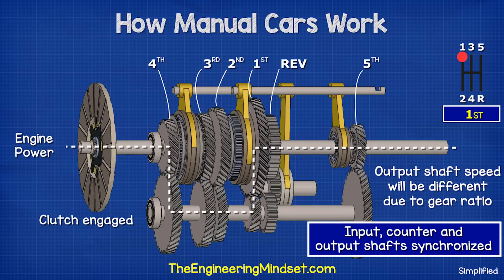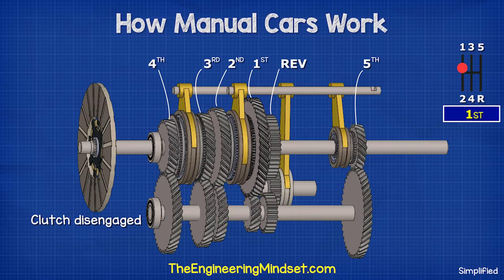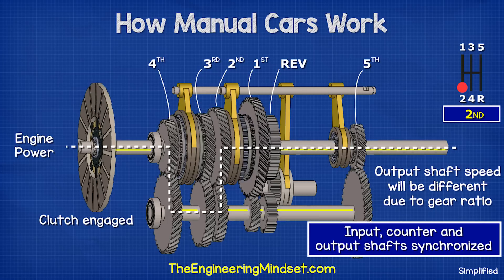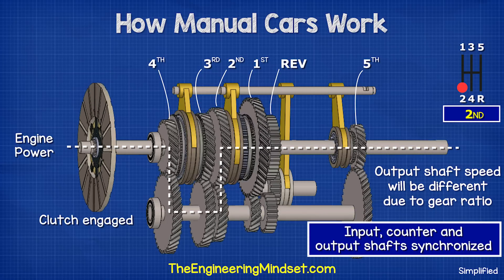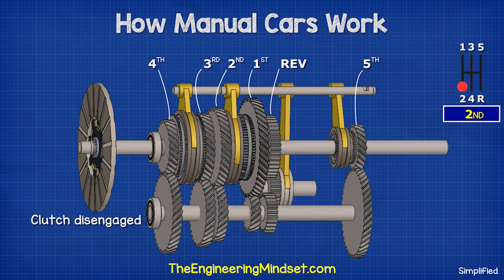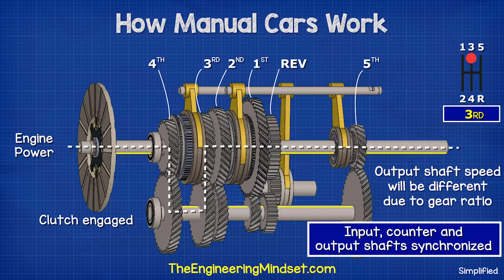For second gear, we disengage the clutch and use the gear shifter to disengage the first gear sleeve. Then we move the shifter into second gear, which pushes the sleeve and blocker ring. This synchronizes the speed and interlocks the second gear. For third gear, we disengage the clutch and use the gear shifter to disengage the second gear sleeve. Then we move the shifter into third gear, which pushes the sleeve and blocker ring. This synchronizes the speed and interlocks the third gear.